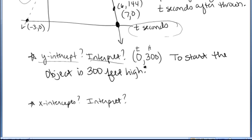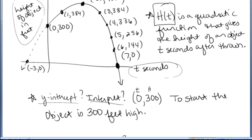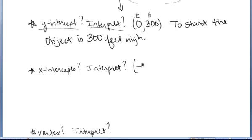And that's an interpretation of the y-intercept. What about the x-intercepts? x-intercepts are the place where the graph hits the x-axis. I see that one x-intercept is the point 7 comma 0, and another x-intercept is the point negative 3 comma 0. There are two x-intercepts. So negative 3, 0, and 7, 0.